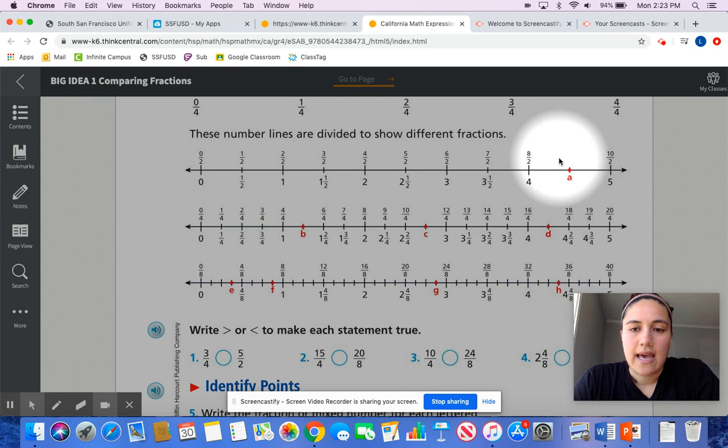If you look at A, we have to figure out what's the fraction on this number line. The number line goes from 0 to 5, and then there's the fractions that are above it. You have 0 halves, 1 half, 2 halves (which is also equal to 1 whole), 3 halves, 4 halves (which is equal to 2), 5 halves, 6 halves, 7 halves, 8 halves.